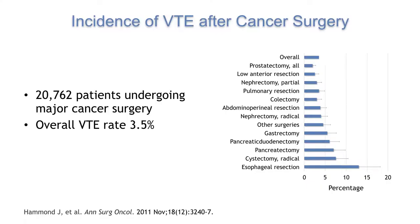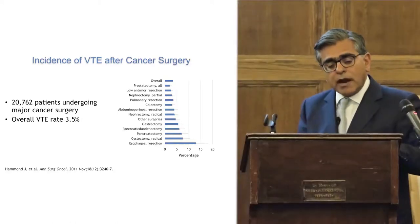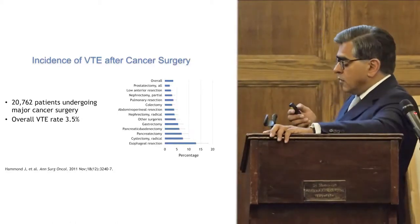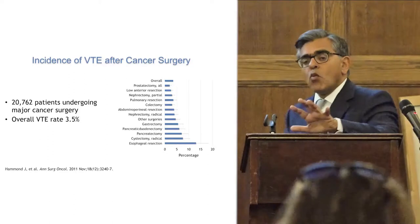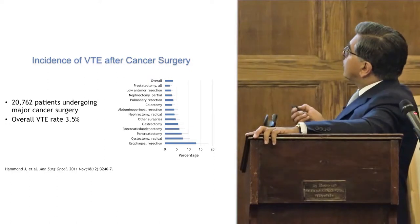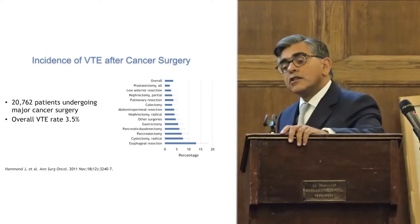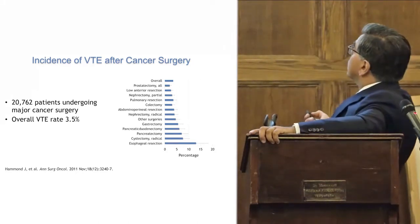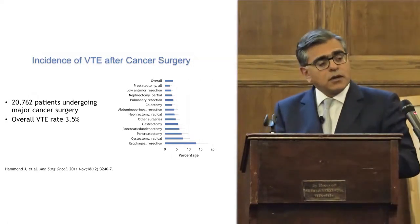Looking at data from a large US national outcomes program on surgical quality, the overall rate by day 30 of symptomatic venous thromboembolism in the cancer surgical population was 3.5%. This varies considerably depending upon the primary organ site for operation.